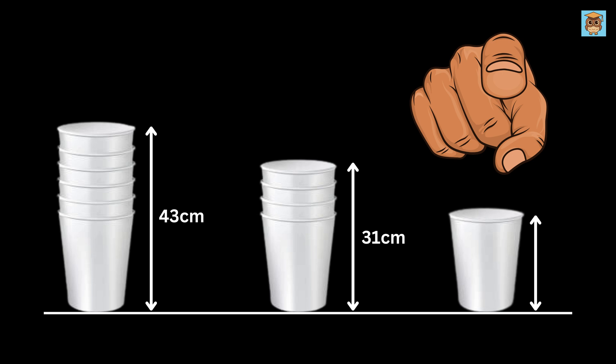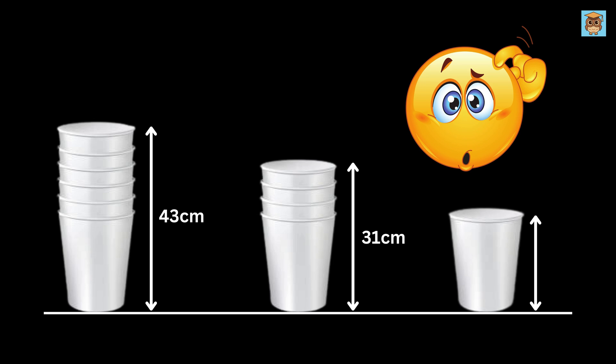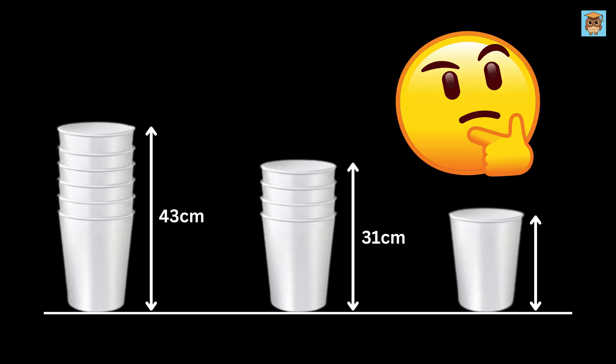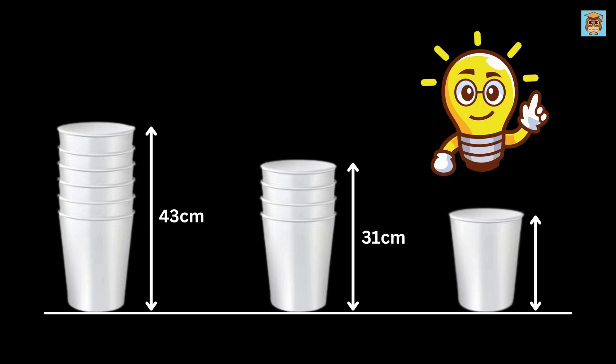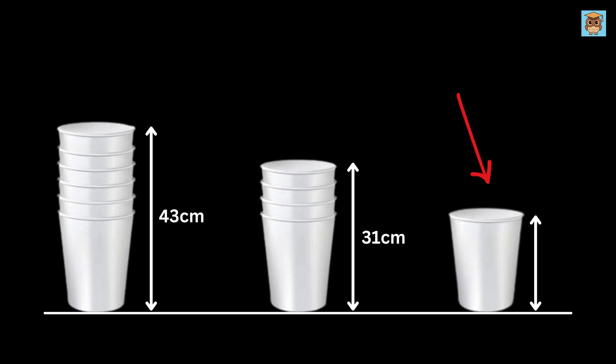At first glance you might scratch your head in confusion, but then if you think a bit about it you will realize that we can solve this question by considering variables. Let us label the height of this glass as A.